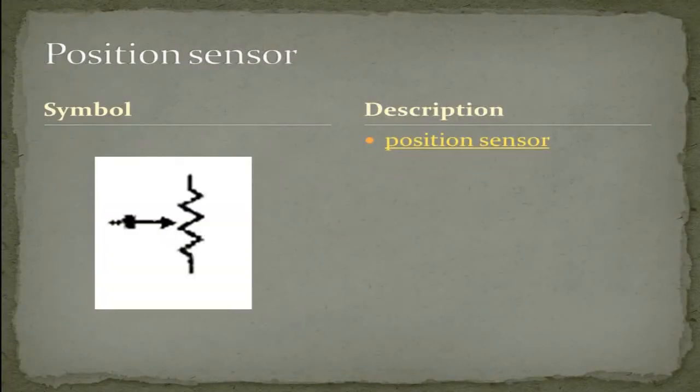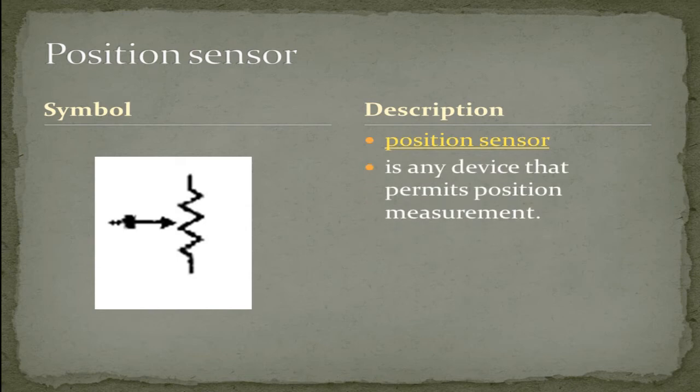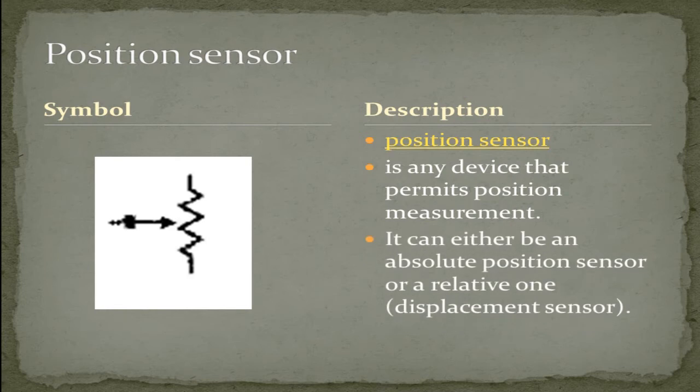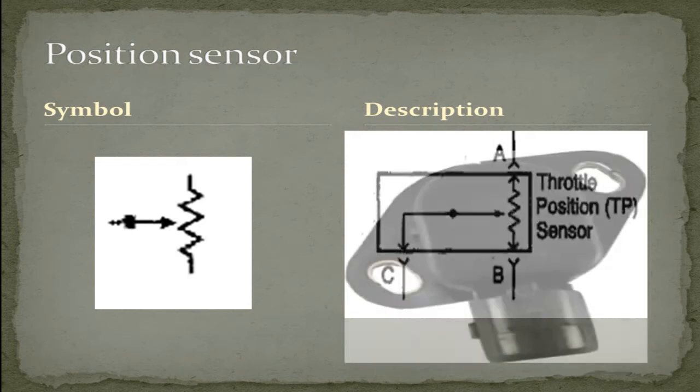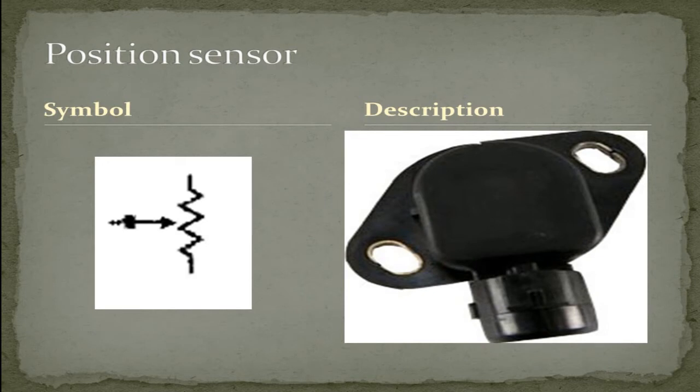A position sensor. A position sensor is any device that permits position measurements. It can either be an absolute position sensor or a relative one (displacement sensor). And here's a clip out of a schematic of a throttle position sensor. And here is a physical one of many types and styles of a throttle position sensor.